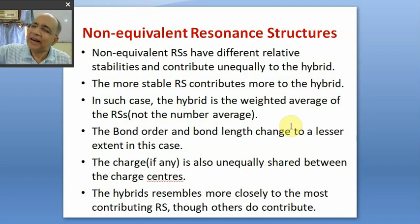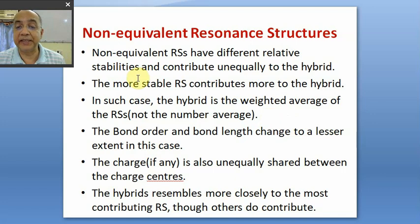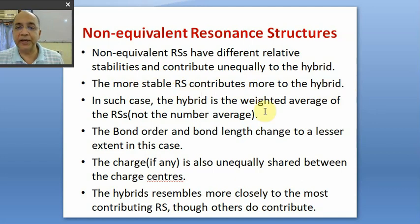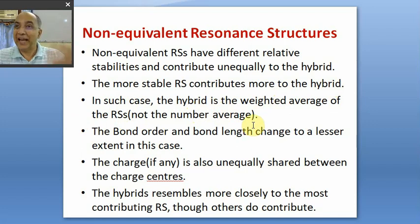These rules will tell you which RSS contributes more, which contributes less, and which is totally insignificant — which you can dare to omit. Non-equivalent resonance structures have different relative stabilities and contribute unequally to the hybrid. The more stable resonance structure contributes more. In such a case the hybrid is not a number average but a weighted average of all the RSS.